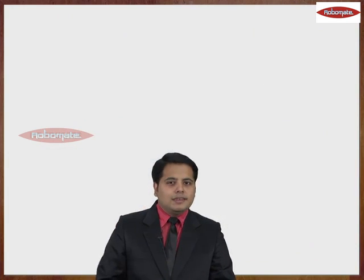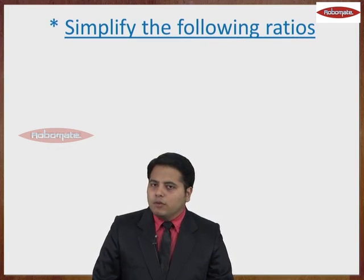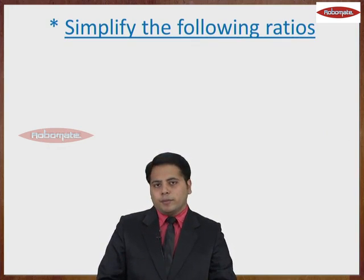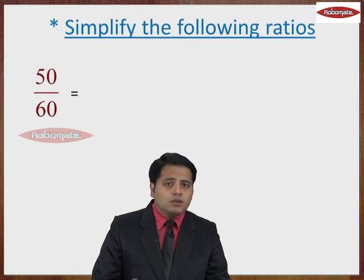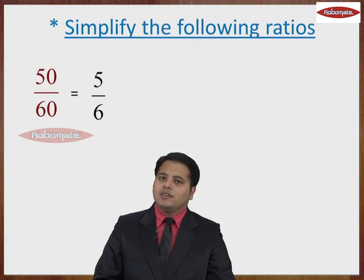So, let us do a small exercise further. I will be giving you a few ratios and you will have to simplify the following. For example, 50 upon 60. You can cancel the 0's and we get it as 5 upon 6.